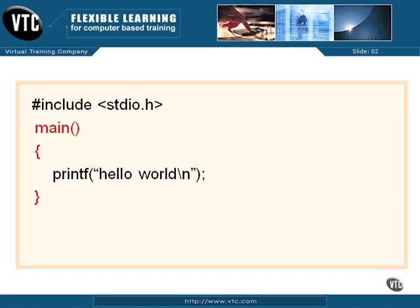The compiler, when it creates our object code, looks for that word main — looks for that function and says, this is where things are going to start. That's where your program will begin. Where it goes from there is up to you and your user and things like that, but the program will always start at main.